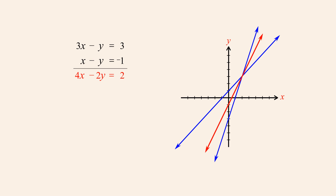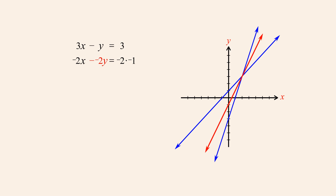But let's say that before adding the equations in this system we multiply both sides of the bottom equation by negative 2. Now when we add the equations we get x plus y equals 5. Although this equation's graph must still pass through the intersection point of the two lines of the system, it now has a different slope than before.